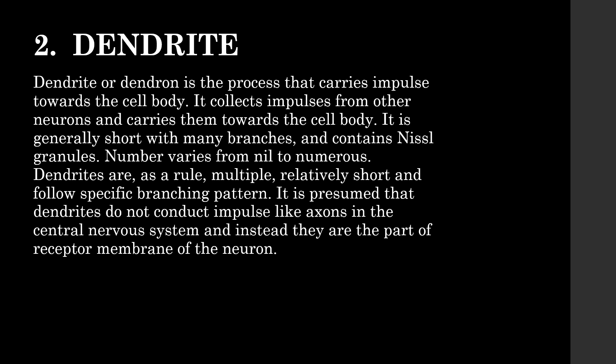Dendrites. A dendrite, or dendron, is a process that carries impulses towards the cell body. It collects impulses from other neurons and carries them towards the cell body. Dendrites are generally short with many branches and contain Nissl granules. Their number varies from one to numerous. As a rule, dendrites are multiple, relatively short, and follow a specific branching pattern. It is presumed that dendrites do not conduct impulses like axons in the central nervous system; instead, they are part of the receptor membrane of neurons.